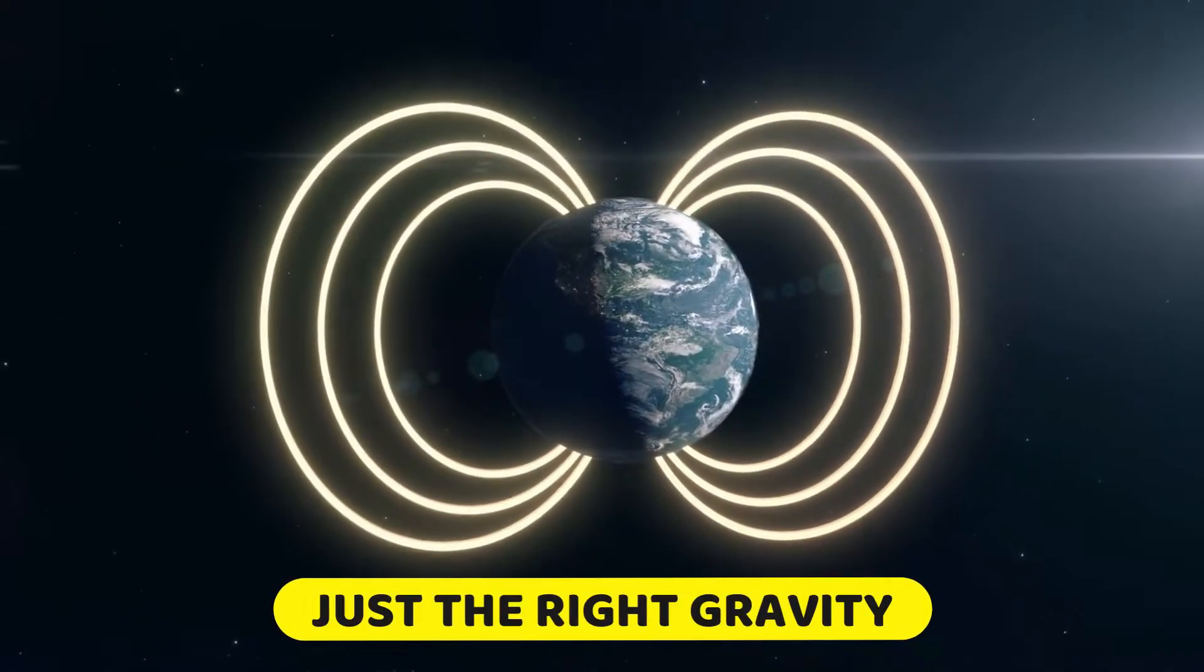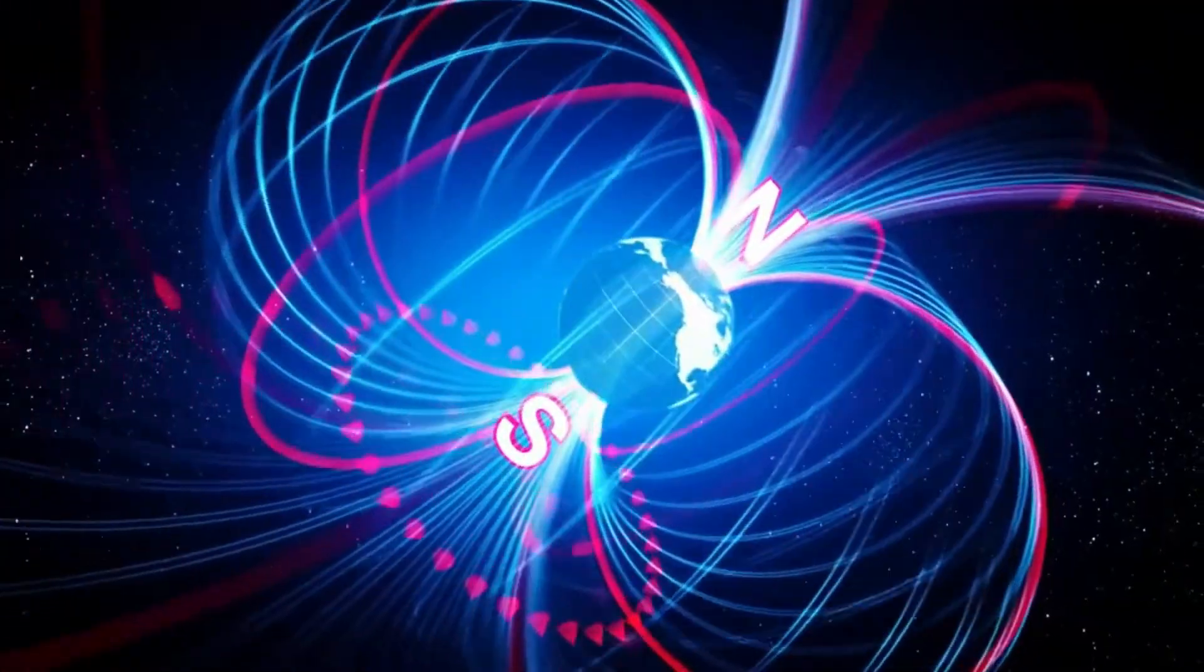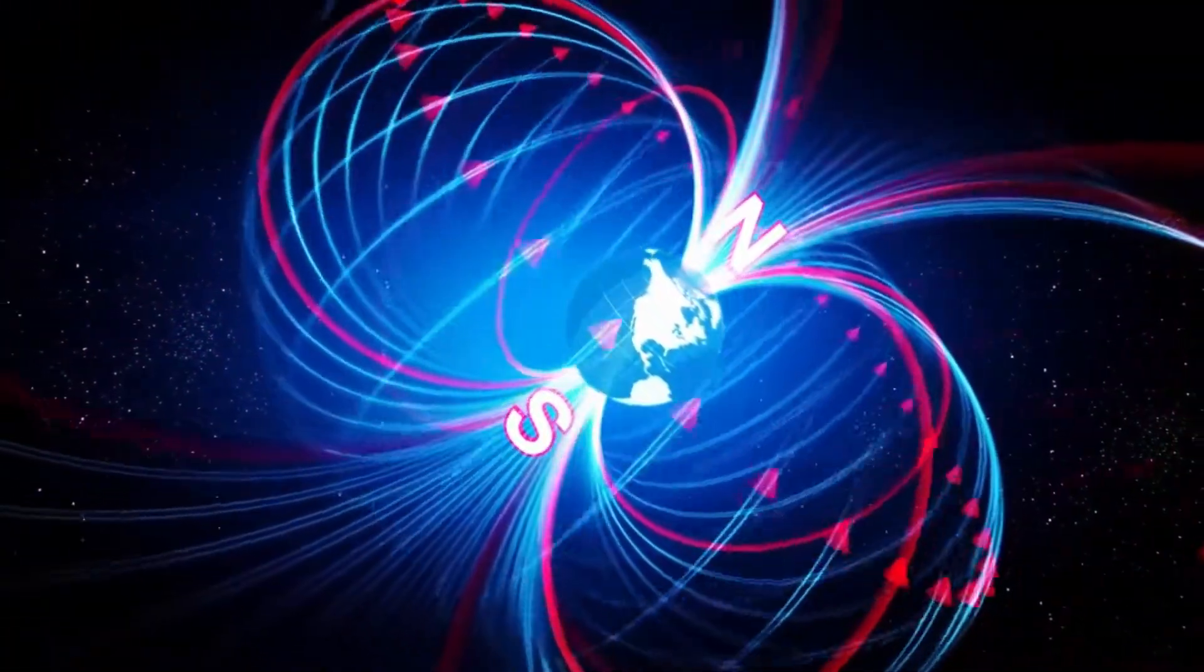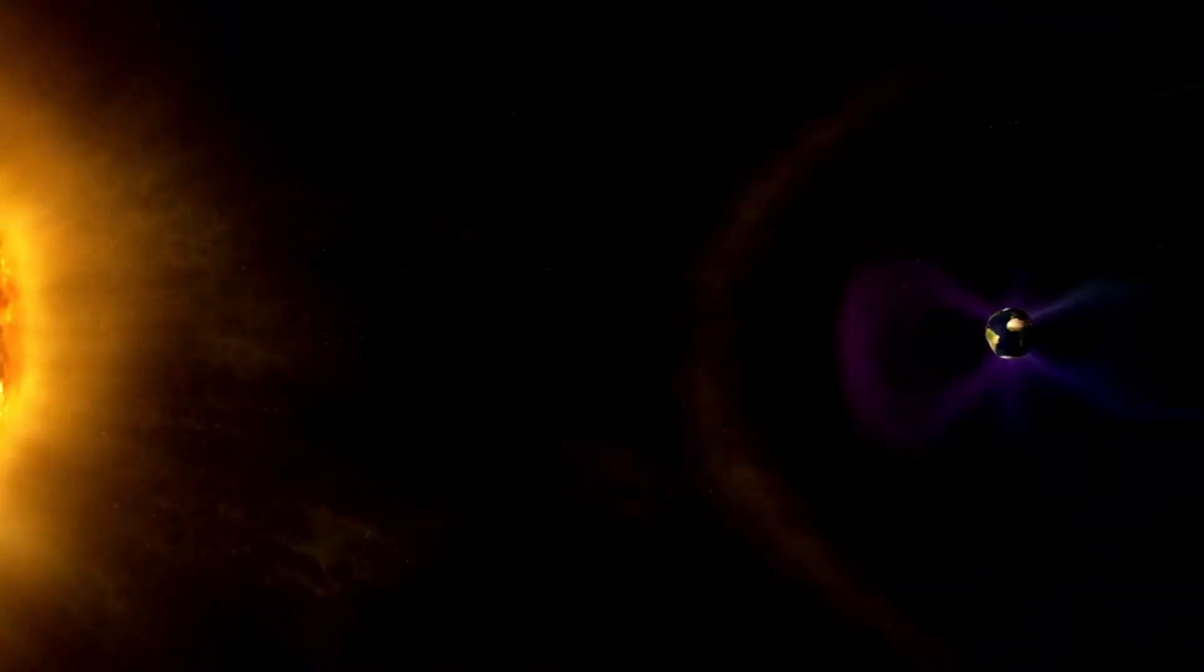Second, the right magnetic field and atmosphere. Due to the Earth's rotation and the existence of the inner iron-nickel core, it has a stable magnetic field that can resist the solar wind.